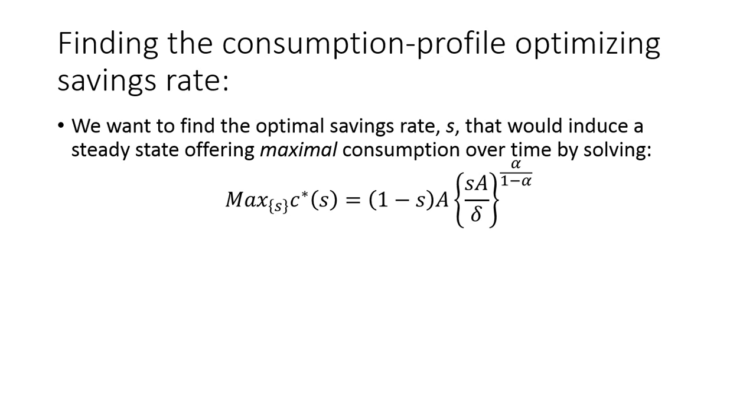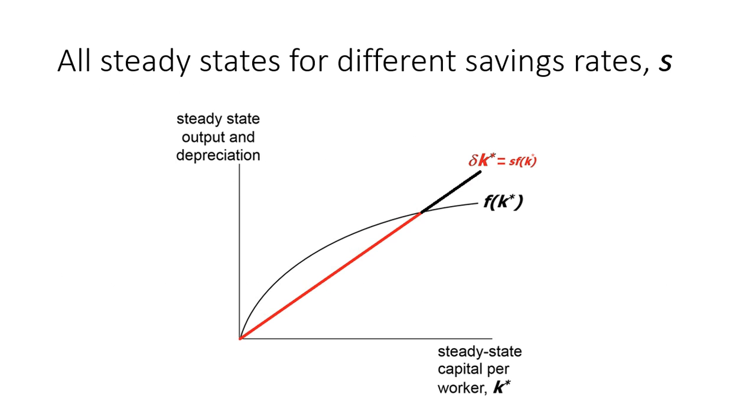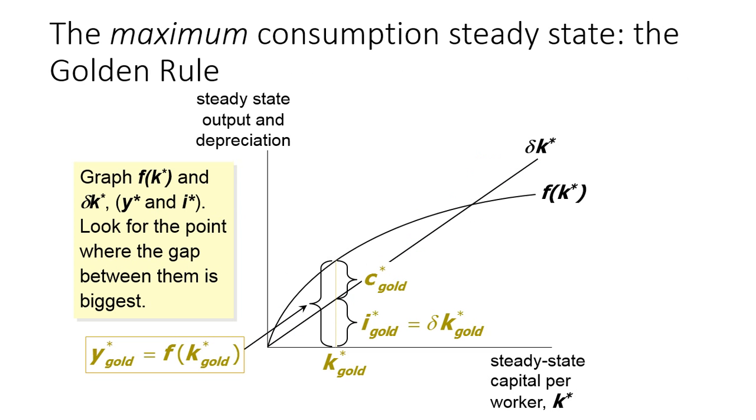So recall that the first order condition to maximizing consumption with respect to the savings rate implies that the first derivative should equal zero at the optimum. So we're asking, which point on this red line is going to give us the largest consumption profile? Which point gives us the furthest distance between the amount of output I'm generating and the amount I'm actually saving? Because the difference between those is the consumption profile.